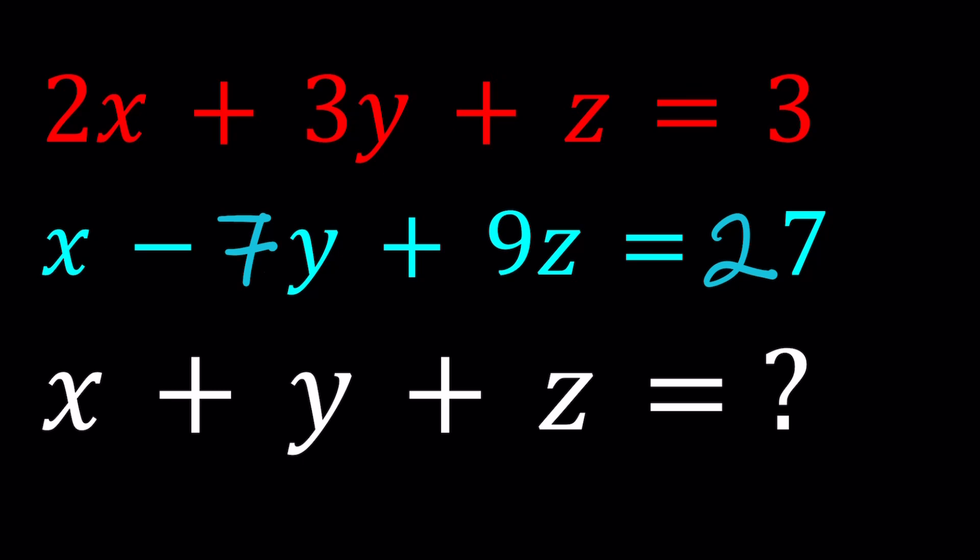We have 2x plus 3y plus z is equal to 3 and x minus 7y plus 9z is equal to 27. And we're supposed to find x plus y plus z.